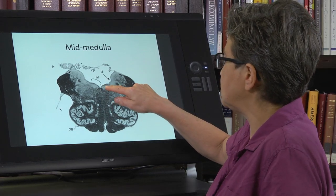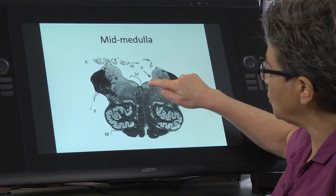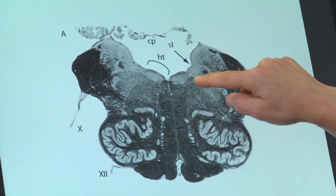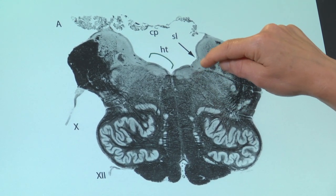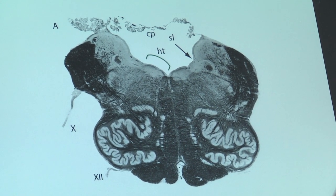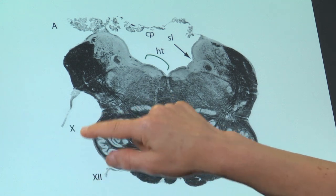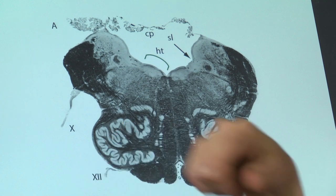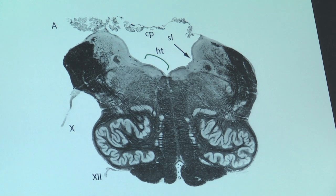This is cranial nerve 12. Here's the sulcus limitans — this is somatomotor, giving rise to motor neurons that innervate the somatic muscle of the tongue. Just lateral to it are autonomic preganglionics: the dorsal motor nucleus of the vagus. These dorsal motor nucleus of the vagus neurons exit through cranial nerve 10 and innervate parasympathetic ganglia throughout the body down to the hindgut.